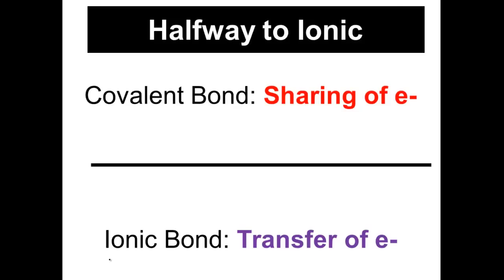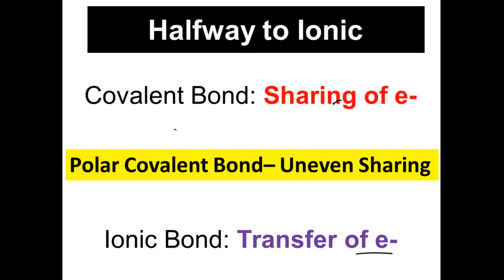So far in chemistry, we should all have an understanding that covalent bonds deal with the sharing of electrons, and ionic bonds deal with the transfer of electrons. But what about a blend between the two? What we end up having is what's known as a polar covalent bond. Sharing is just like you have four slices of pizza and I have four slices of pizza — that is 100% even sharing. In chemistry, it doesn't always happen. Elements can share electrons unevenly, like I have five slices and someone else has three. That is uneven sharing. So a polar covalent bond is kind of a halfway point between a pure covalent bond and a pure ionic bond.